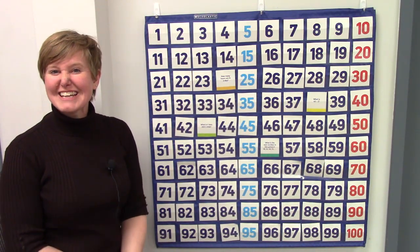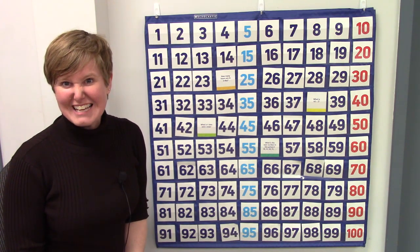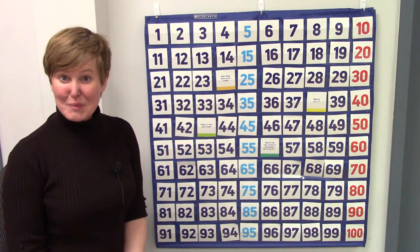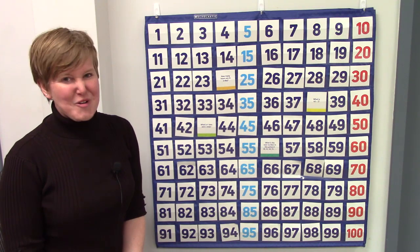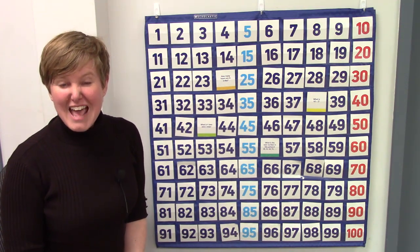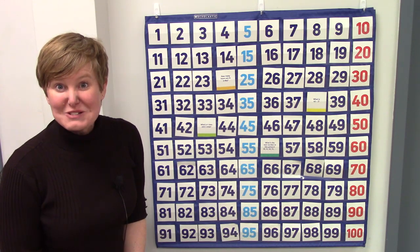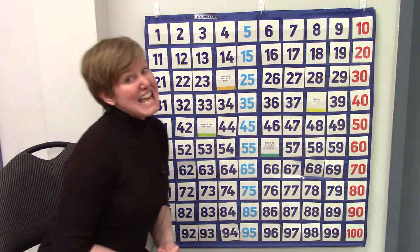We're going to start off by looking at our 100s chart. It is the perfect place to start learning how to add 10 to a number. Now we've done this before. We find a number on the board, and we figure out what the next one underneath of it would be, because that would be plus 10. Let's take a look.